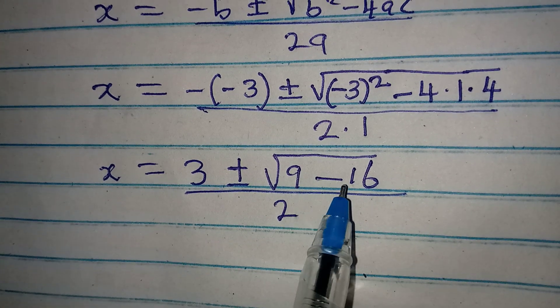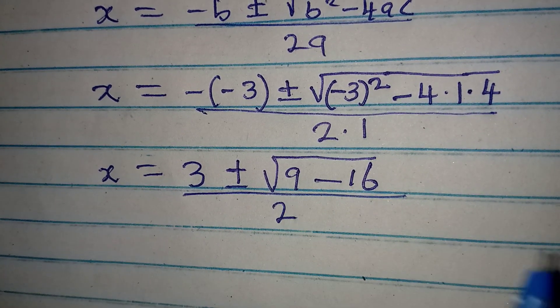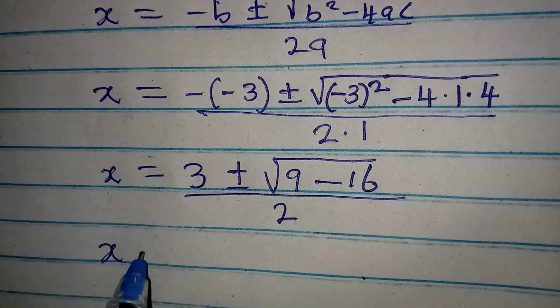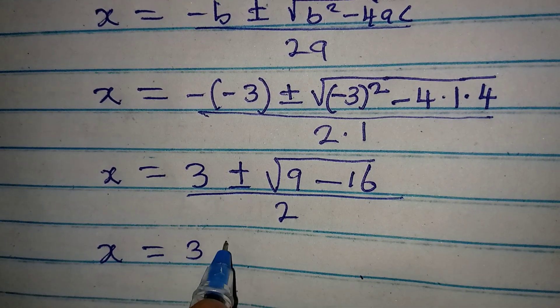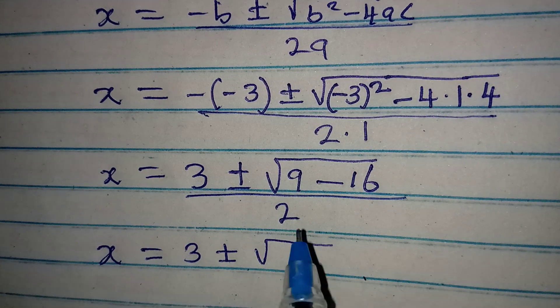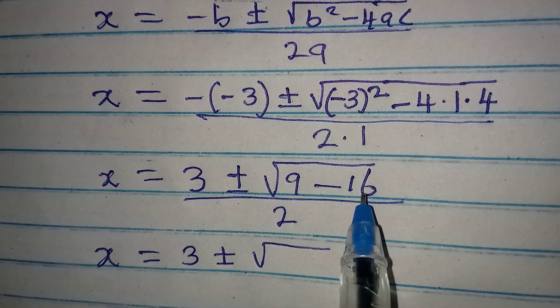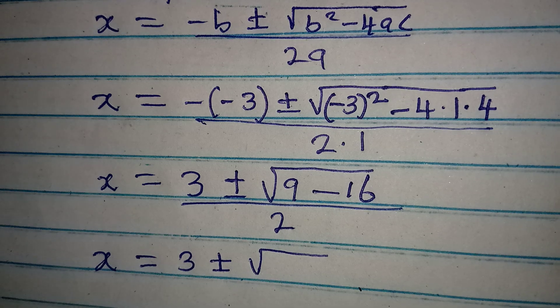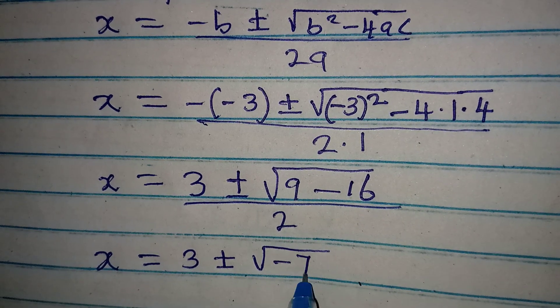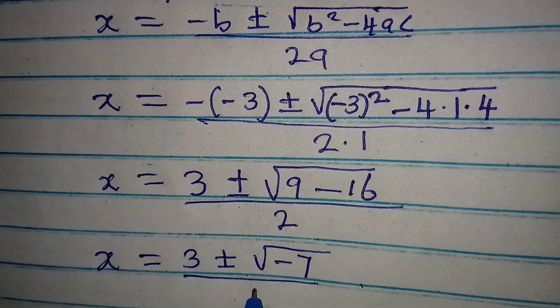Now, x from here is equal to 3 plus or minus, then we have 9 minus 16, and that is going to give us minus 7, and the whole of this is over 2.